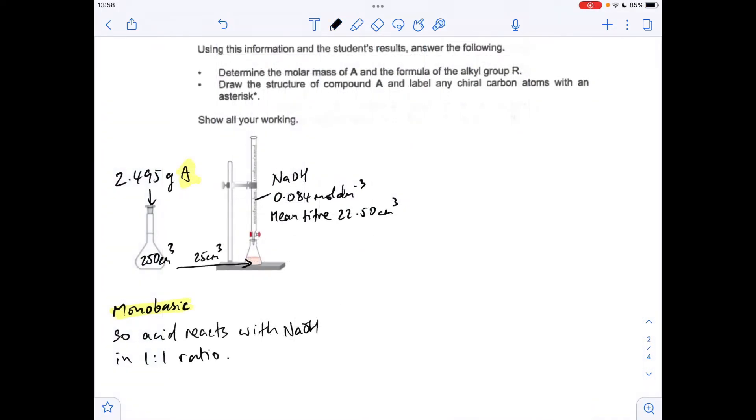Okay, so we'll move on to the calculation now. I've got my trusty diagram here to visualize what's happened. So what have they done? They've taken 2.495 grams of A. You'll notice there I've highlighted that and the word monobasic. We're told it's monobasic, so what does that mean? It donates a single H⁺, so in other words this acid reacts with sodium hydroxide in a 1:1 ratio.